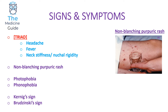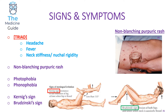These two signs are not common in clinical practice, but they do classically present in SBAs so you need to be aware of them. Kernig's sign is resistance to full extension of the leg at the knee when the hip is flexed. Brudzinski's sign is when a patient will flex both hips and knees when the neck is passively flexed.